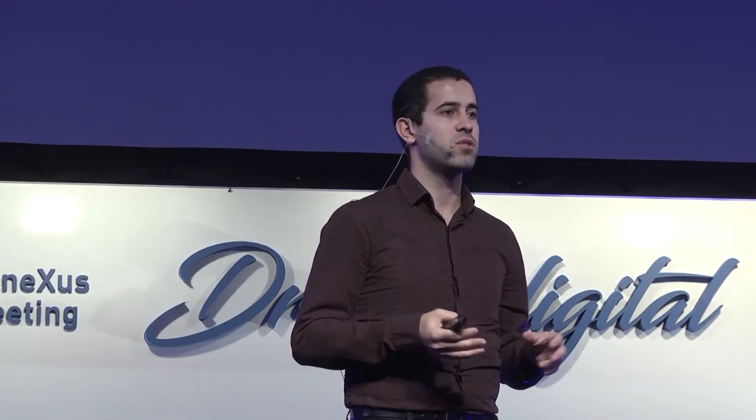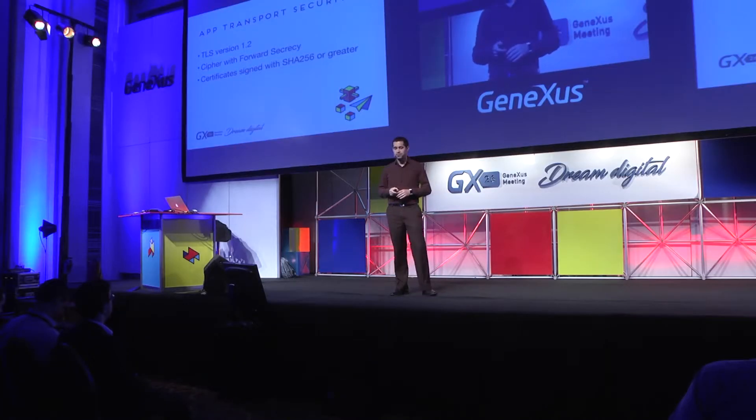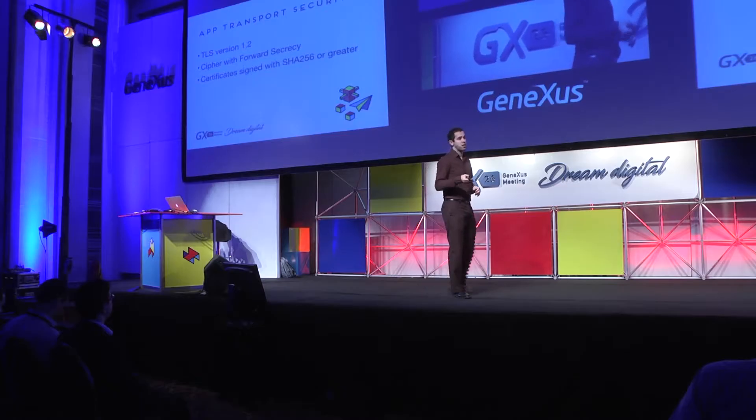Another feature of iOS 9 is app transport security. These are restrictions on the network connections that my device can make. These are minimum requirements and best practices that Apple imposes as from iOS 9: a minimum version of the TLS protocol 1.2, ciphers with forward secrecy, and certificates that have to be signed with SHA-256 or greater. If you cannot comply with these restrictions, you can set some exceptions by domain, lowering the level of restriction. What we did in GeneXus 15 was exactly that — we added properties so that you can configure these exceptions.